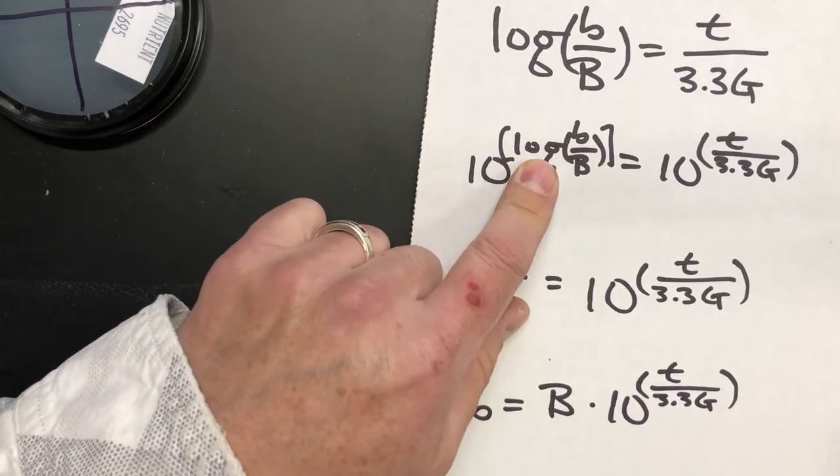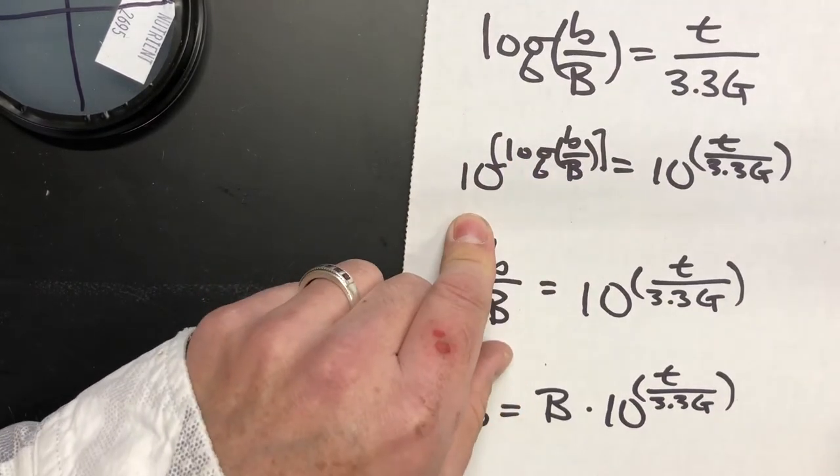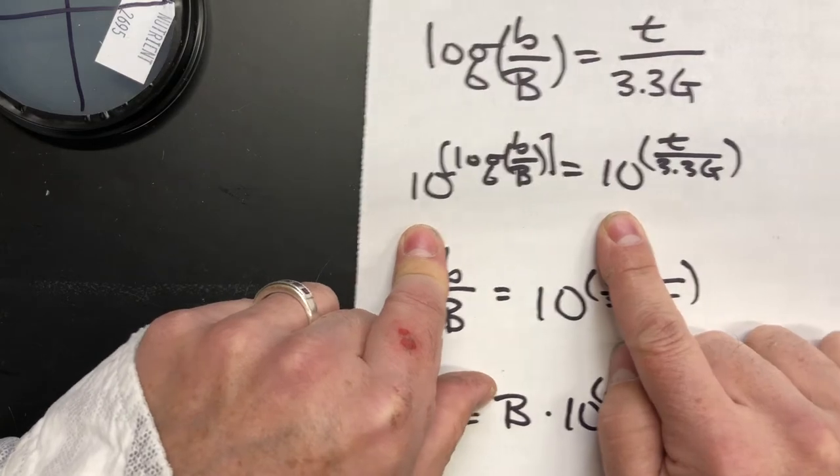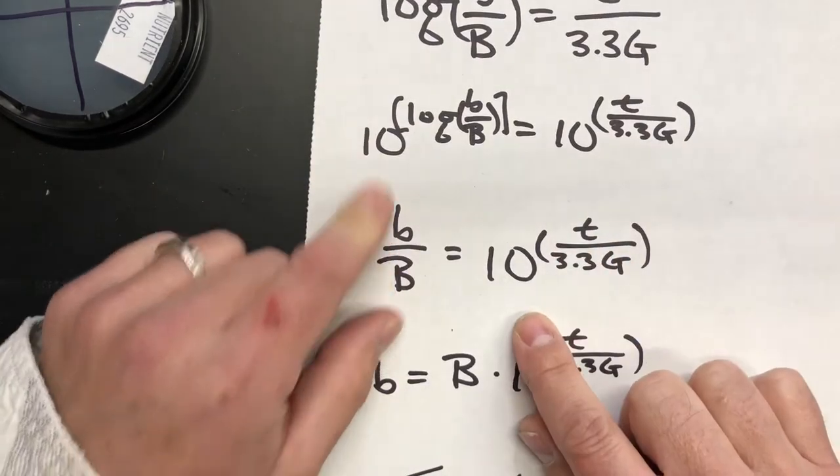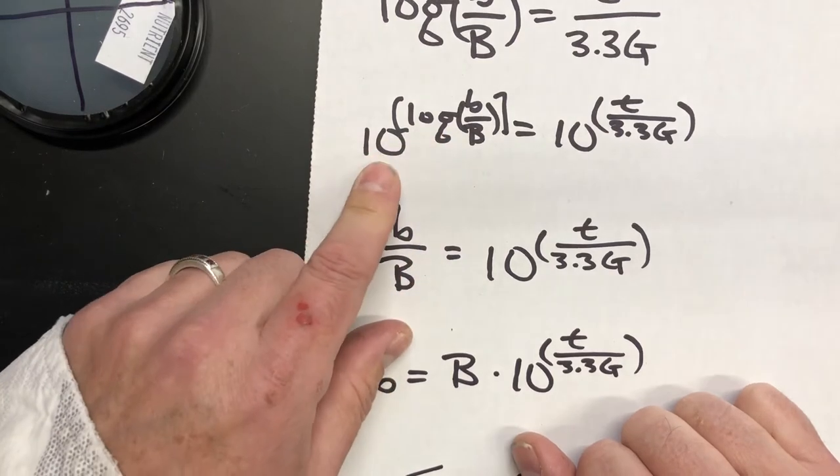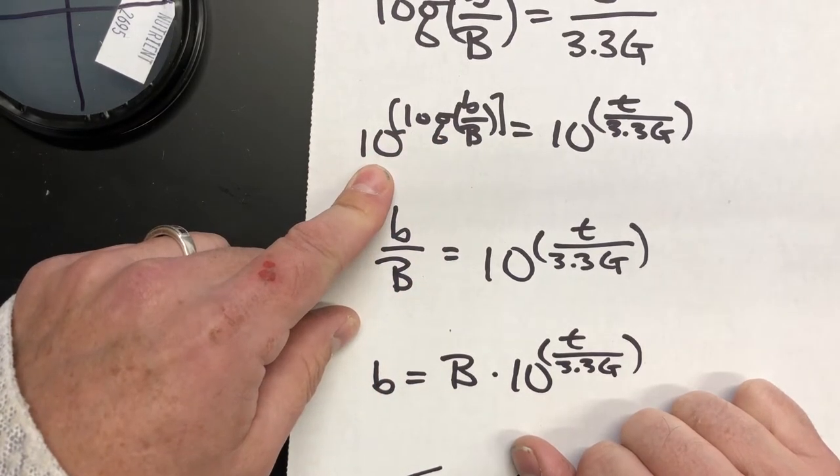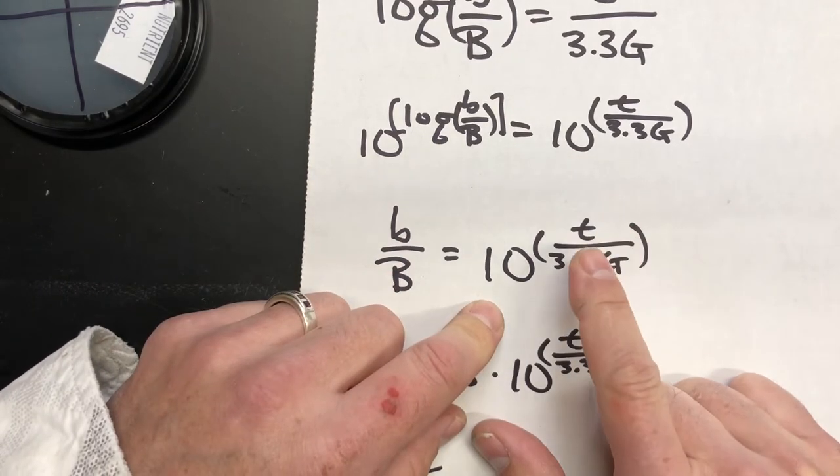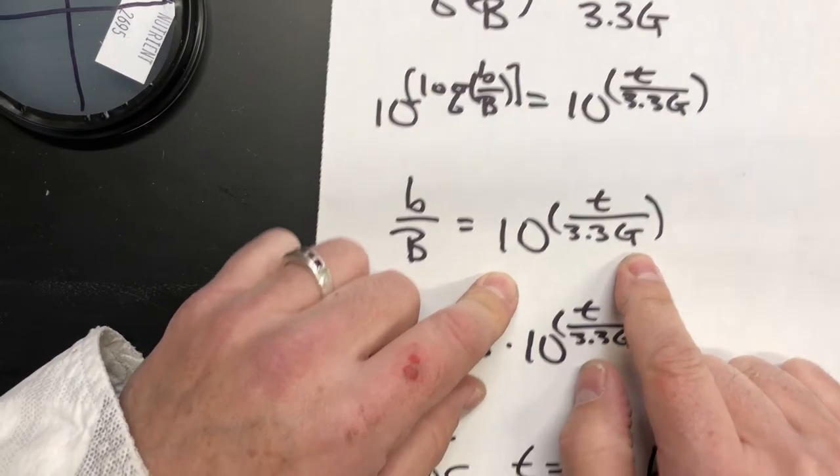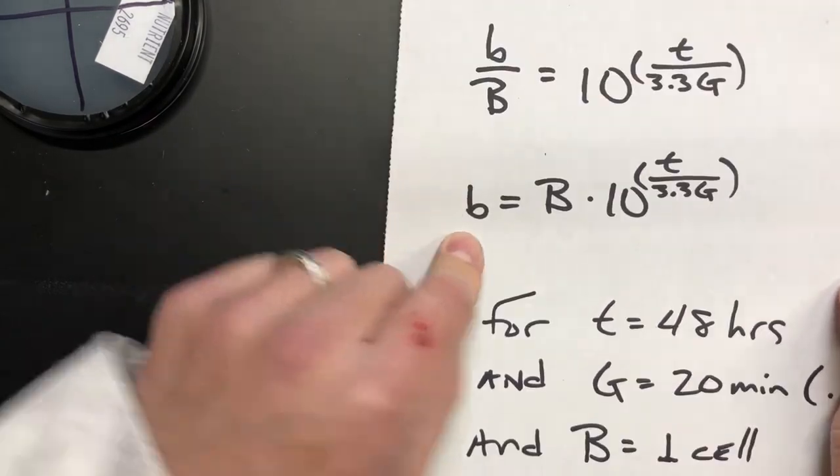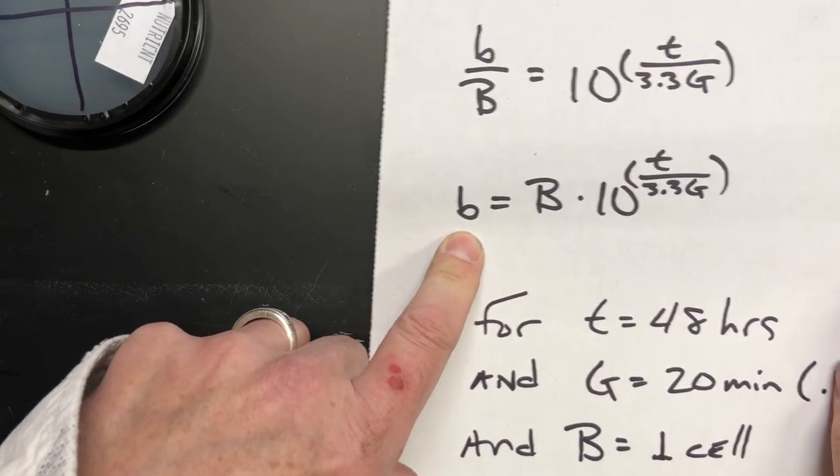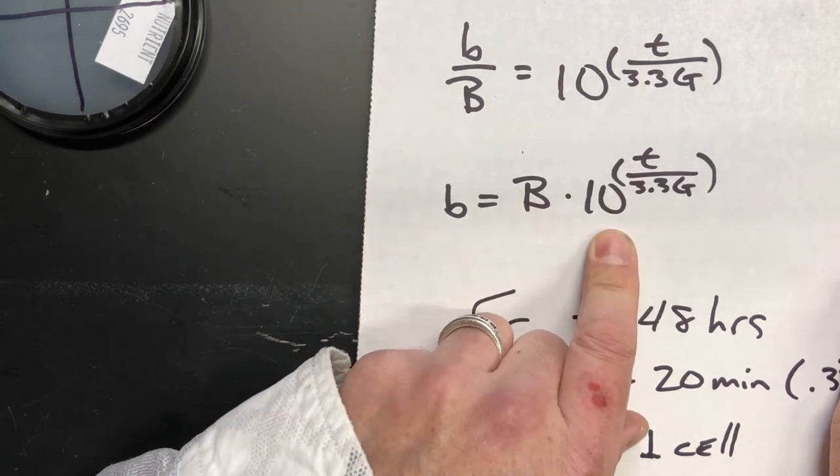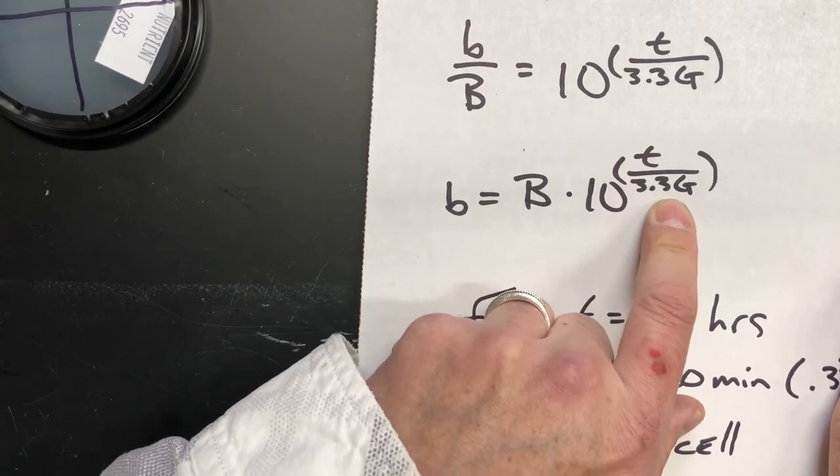Now to get rid of the logarithm, because it's base 10, we make it an exponent of 10. We have to make the other side an exponent of 10 to use the same operations on both sides. The logarithm and the exponent will cancel out the 10 on this side. We get B over B₀ equals 10 to the power of T divided by 3.3G. Now that means that B at the end of our time period, whatever that time period is, equals our starting population times 10 to the power of T over 3.3G.